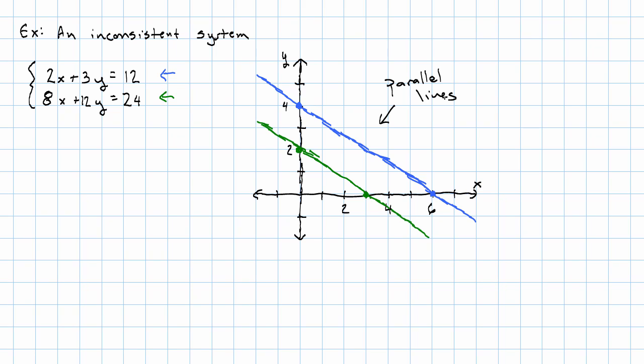Let's see what happens if we try to solve it algebraically. I'm going to try elimination, because this system is well set up for it. All the variables on the left, all the constants on the right. And I think that if I multiply both sides of the first equation by negative 4, we'll get negative 8x minus 12y is negative 48.